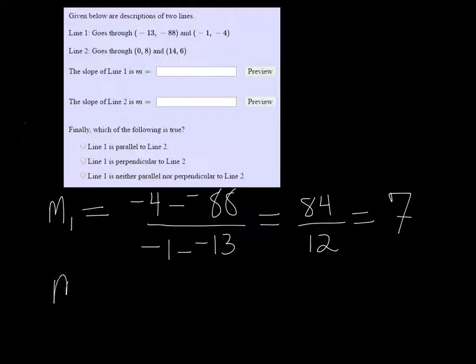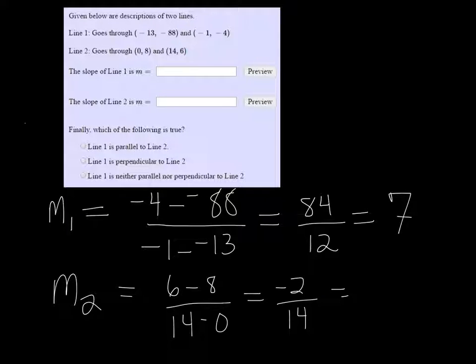So M2 is 6 minus 8 over 14 minus 0. So 6 minus 8 is negative 2 over 14 is negative 1 seventh. These are negative reciprocals of each other, so that means that they are perpendicular.